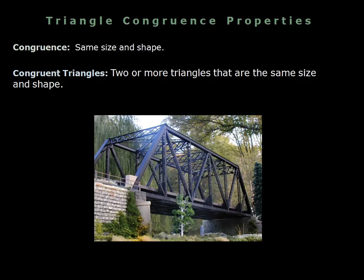In this video we're going to be talking about triangle congruence properties. Congruence means the same size and shape, so we're going to be talking about showing that triangles are in fact the same size and shape. Congruent triangles are two or more triangles that are the same size and shape.